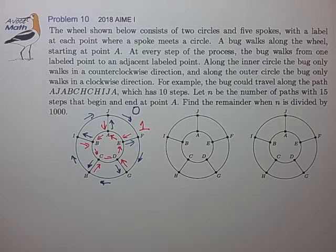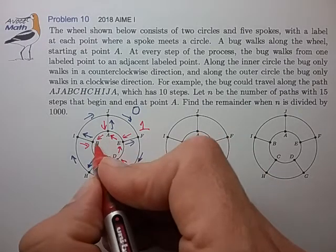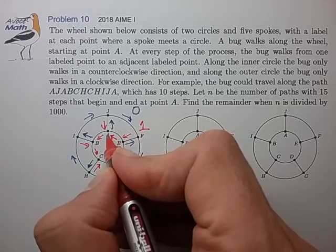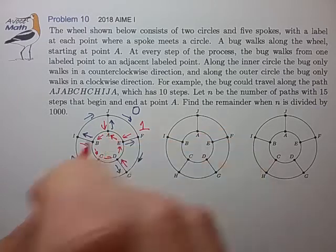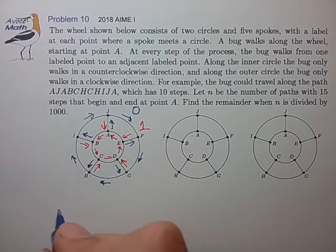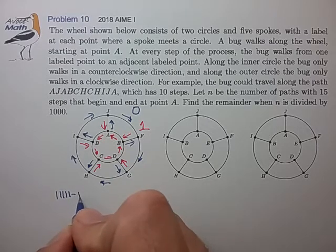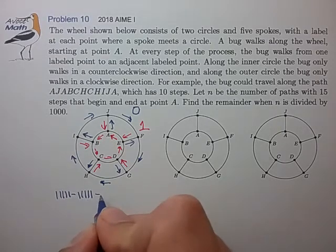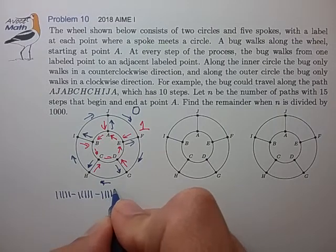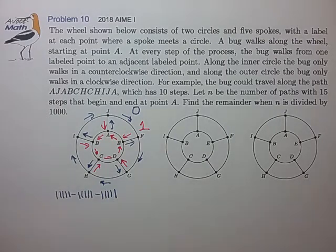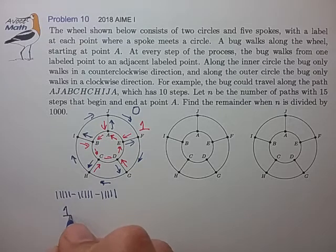So let's look at a few examples to see how this works. In the first example, let's consider the simplest case, where we choose 15 moves around the inner circle to get us back to point A. In our notation, we would call this 5 type-1 moves, 5 more type-1 moves, and 5 more type-1 moves. And there's clearly only one way to do this, so let's give that a count of 1.